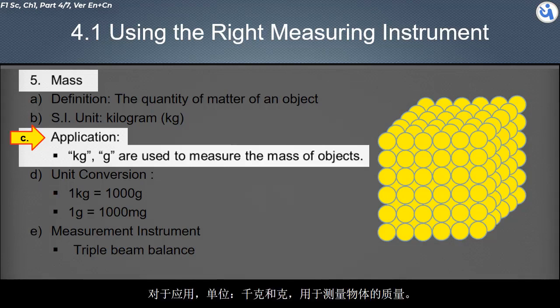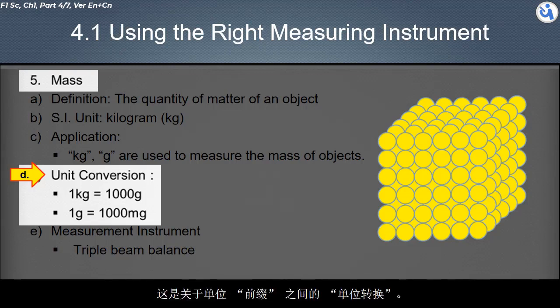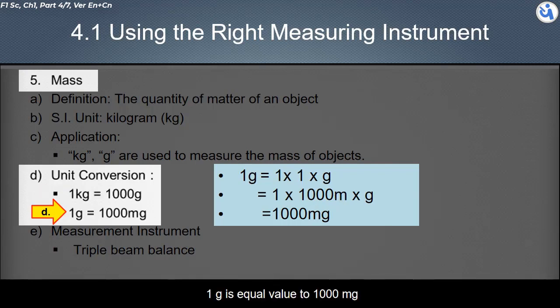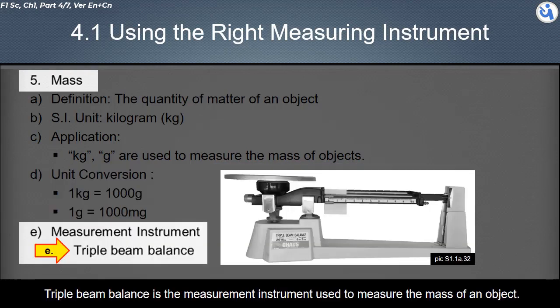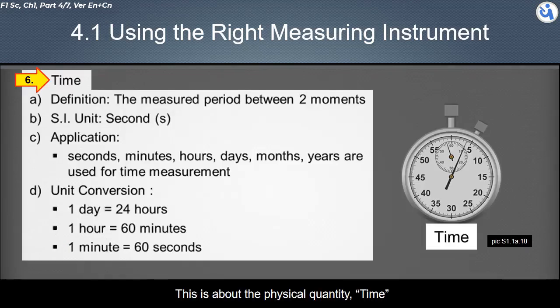This is about the unit conversion between the prefixes of the unit. One kilogram is equal value to 1000 gram. One gram is equal value to 1000 milligram. Triple beam balance is the measurement instrument used to measure the mass of an object.